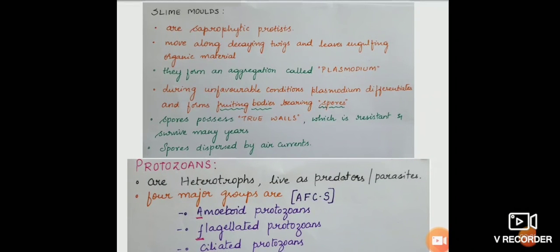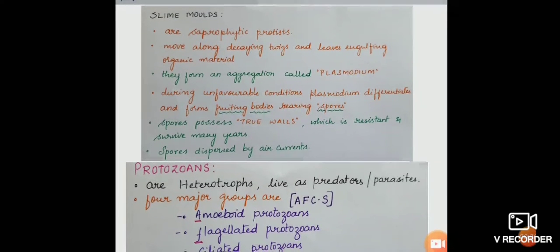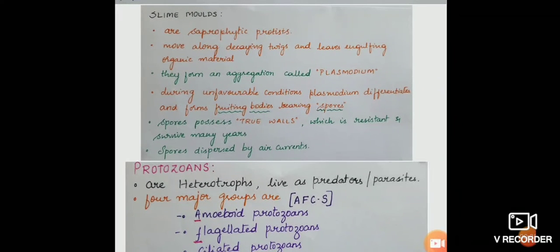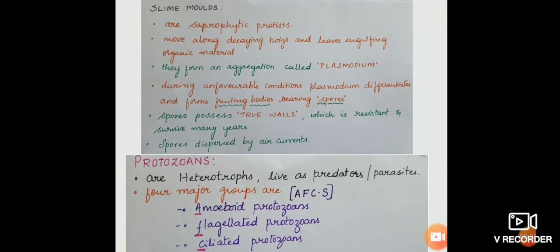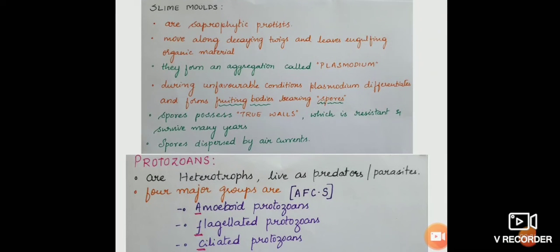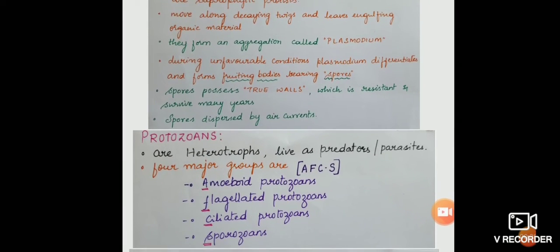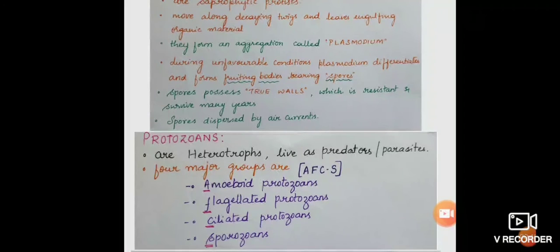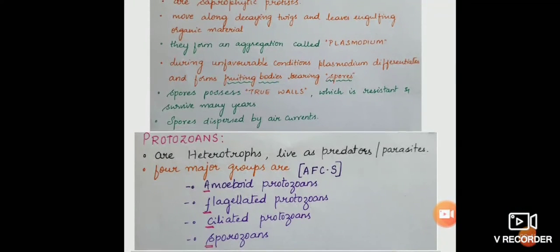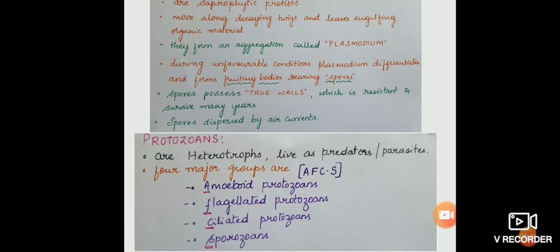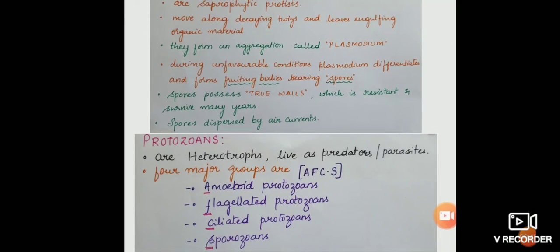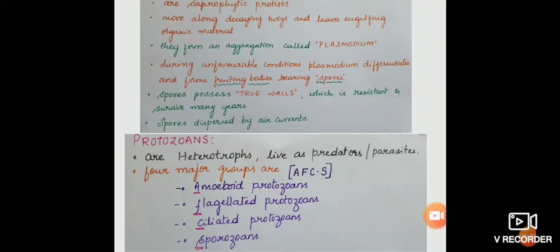Protozoans are heterotrophs. They live either as predators or parasites. They come under the kingdom of protista as well. Four major groups of protozoans are amoeboid protozoans, flagellated protozoans, ciliated protozoans and sporozoans.